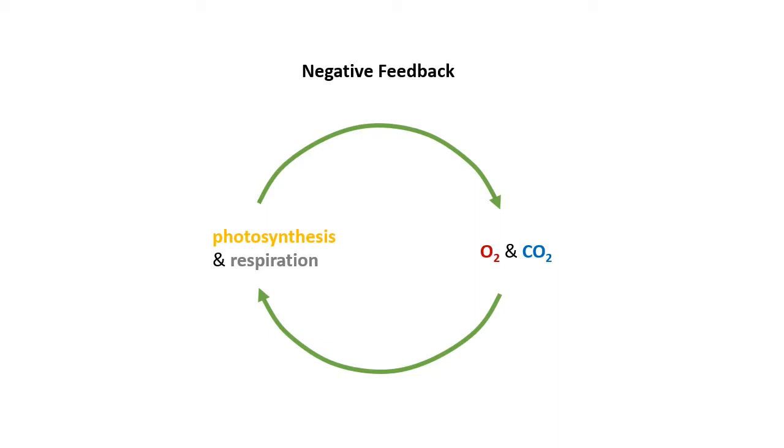And this loop keeps the composition of the atmosphere within certain limits. It's like homeostasis in biology, like when you get too hot, you sweat, and that cools you back down again, and then you stop sweating and can start warming up again.